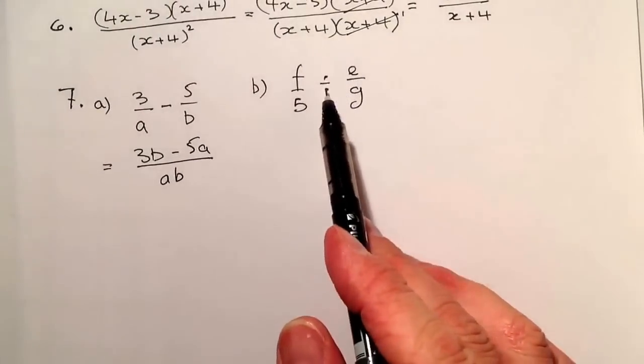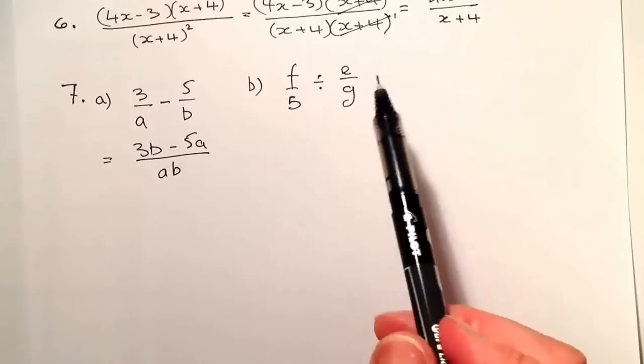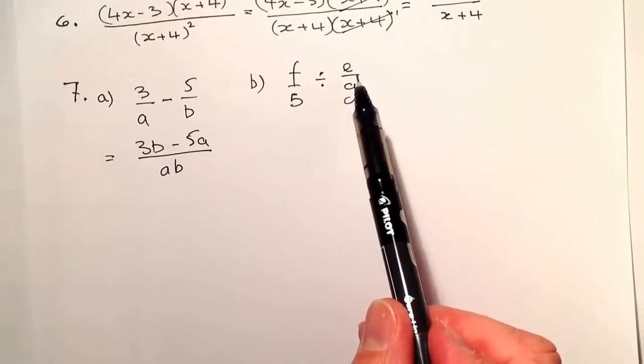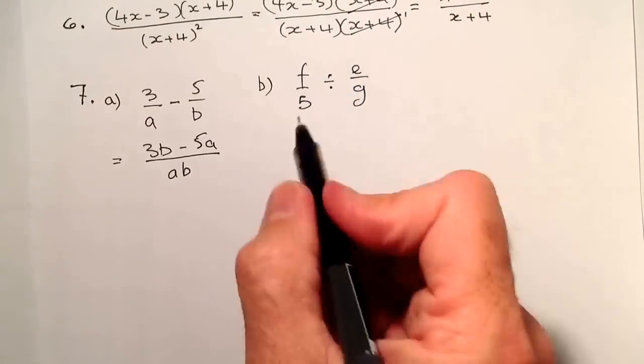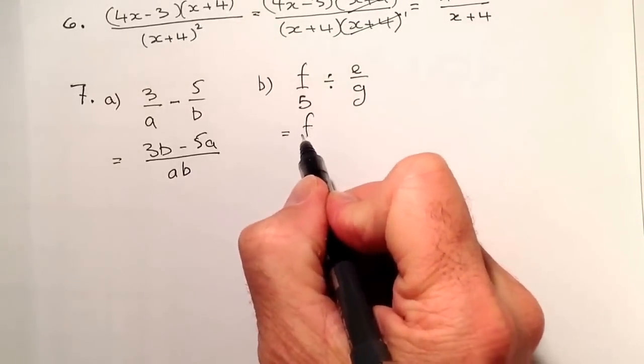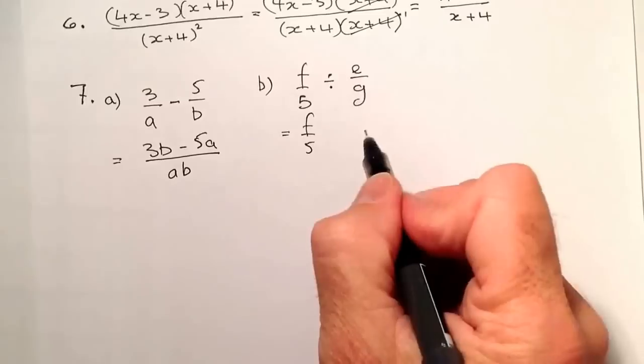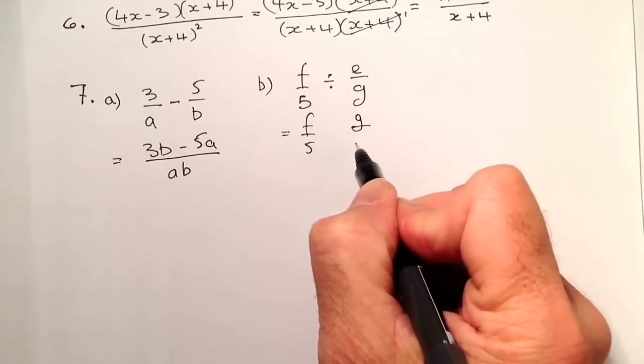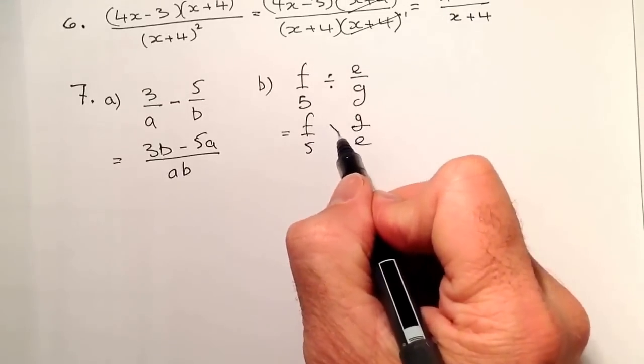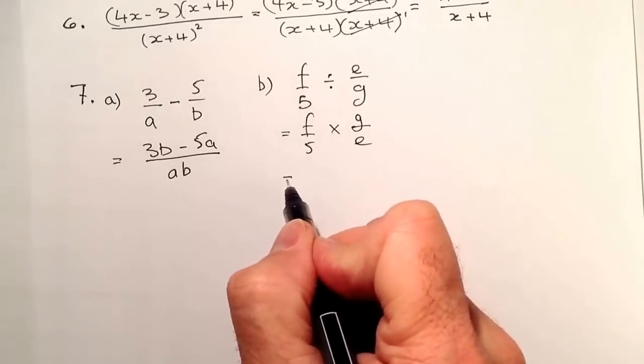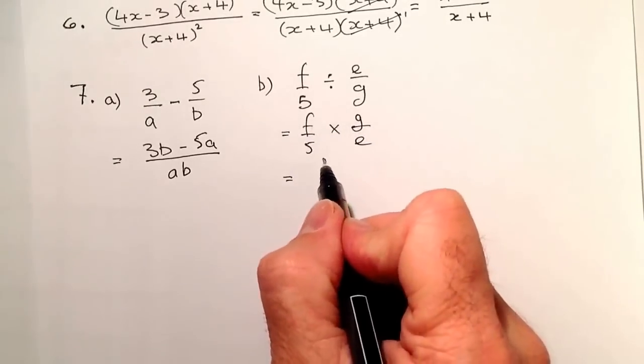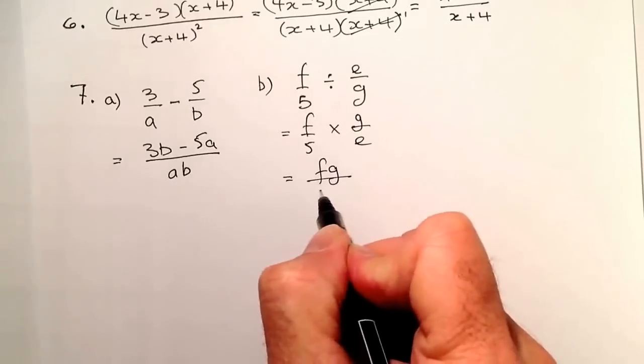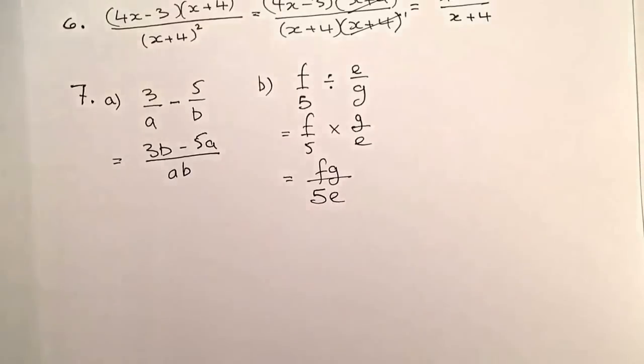So for fraction division, what I'm going to do for dividing fractions, I'm going to flip and change the second fraction. So I'm going to flip it over and change the sign. Let's just do that. So this one stays the same, the first one. I'm going to flip this fraction over, so it's going to be G over E, and I'm going to change the sign to times. Remember when we times, we multiply straight across the way. So that's going to give me FG on the top, and I'll get 5E on the bottom.